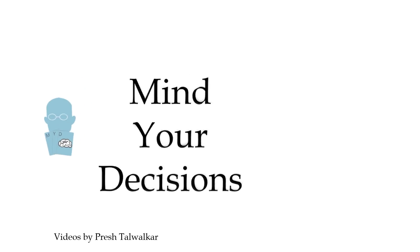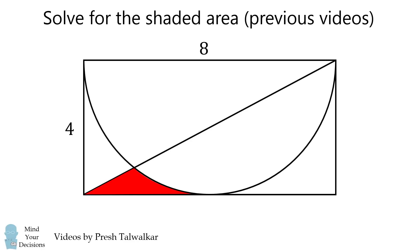Hey, this is Presh Talwalkar reminding you to mind your decisions. Here's a problem from a previous video. Start out with the rectangle whose sides are 4 and 8. Draw a semicircle and then draw a diagonal of this rectangle. What's the area of this shape in red?